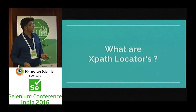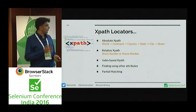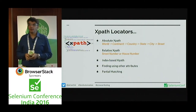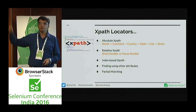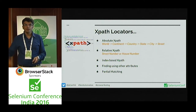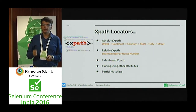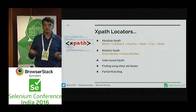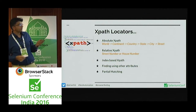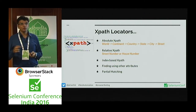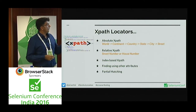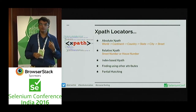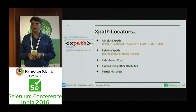XPath locators similarly go by an absolute and relative definition. Absolute XPaths start from the HTML body, div tag, or any other hierarchy, but must be the full hierarchy. Relative XPath again — take the White House example. Index-based XPath is another way, where you specify in square brackets the index of how that element appears in the hierarchy. Other attributes and partial matching are also supported.